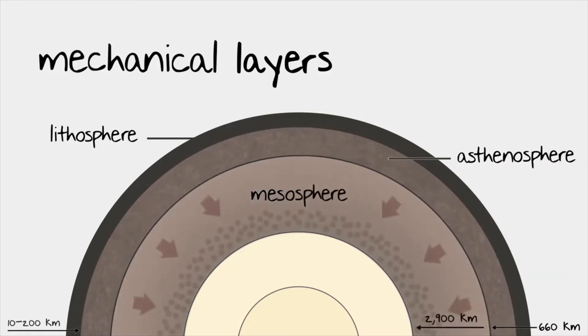The mesosphere is next. At this level, the pressure is really starting to build, which restricts the molecule's ability to move, thus making it very rigid. Past the mesosphere is the liquid outer core.